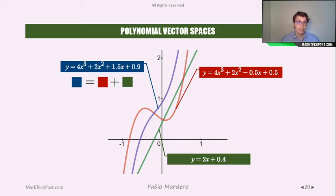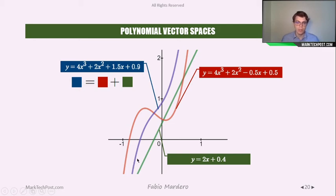For example, here we have the addition operation in practice. We take two polynomials — green and red — and as you can see, both are polynomials of degree 3, because the green one can be considered as having 0 for two of its coefficients. The blue line is our resulting polynomial derived from the addition of the red and green ones.